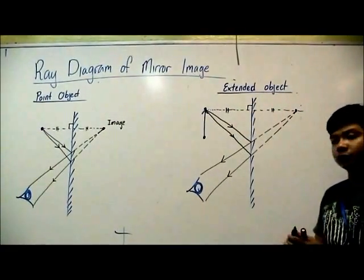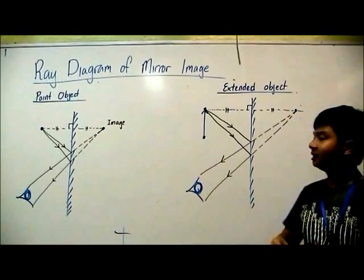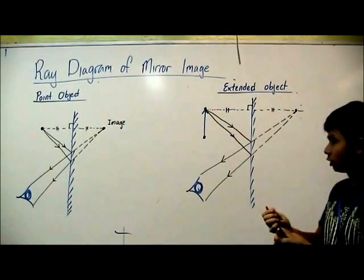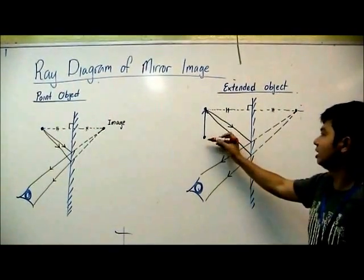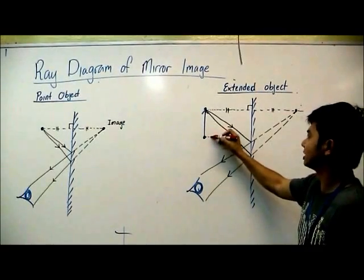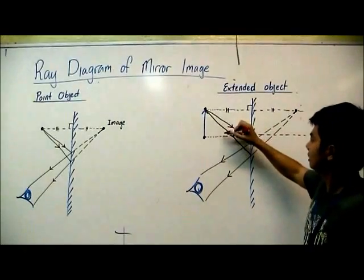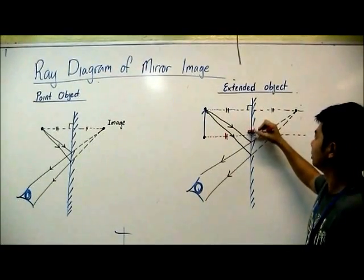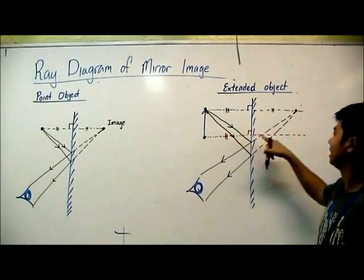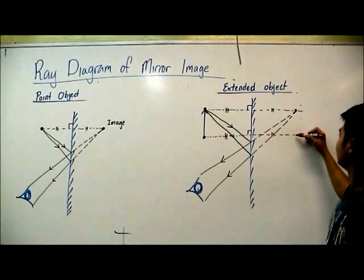So we are half done. So the next step is to construct the ray diagram for the bottom point. So do the same thing. Draw a perpendicular line. So the mirror, make sure it's of equal distance here and there. Then we locate that. The image of the point will be here.